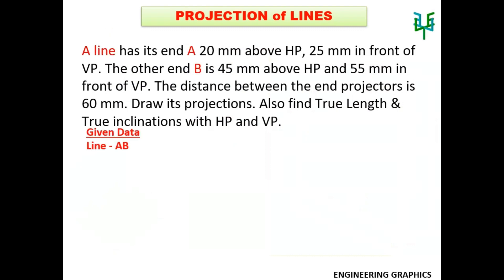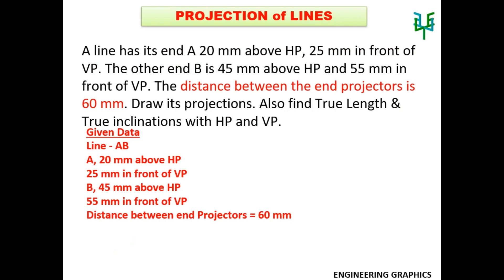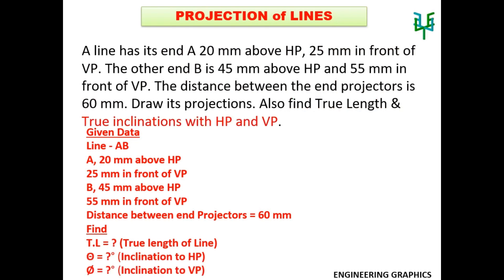The given data are: line is AB. Endpoint A is 20mm above HP and 25mm in front of VP. Endpoint B is 45mm above HP and 55mm in front of VP. Distance between end projectors is 60mm. Find out the true length of the line TL, inclination of the line with HP theta, and inclination of the line with VP phi.